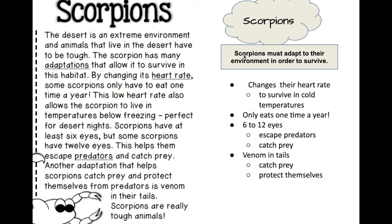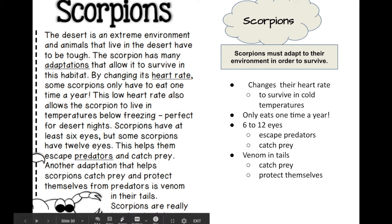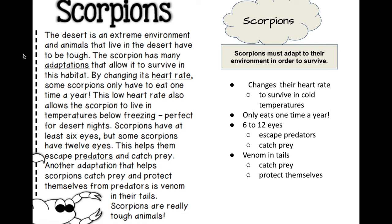Scorpions must adapt to their environment in order to survive — that's what we had. And how does it adapt? Well, changes in their heart rate. Right here it says temperatures below freezing, so we typed in: to survive in cold temperatures. Only eats one time a year — by changing its heart rate, some scorpions only have to eat one time a year. We got six to 12 eyes and the reasons for that. And then venom in their tails to catch prey. So by using this boxes and bullets, we see that we have a topic, a main idea, and some details. By doing that, we can take all of this information and turn it into a main idea and figure out the main idea and details.